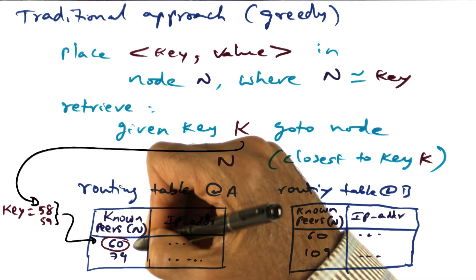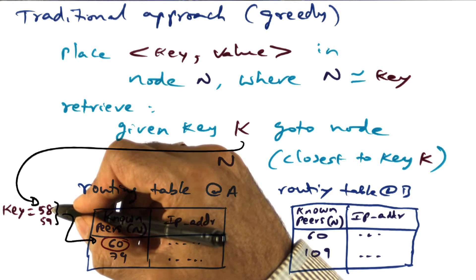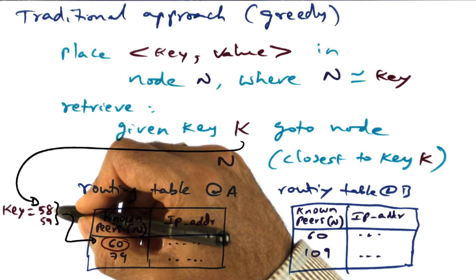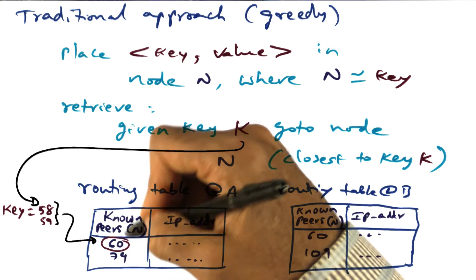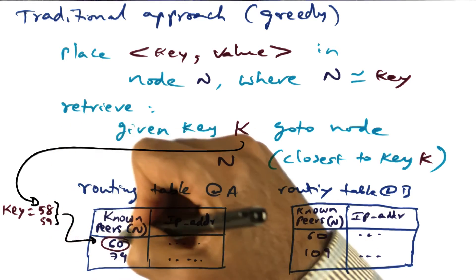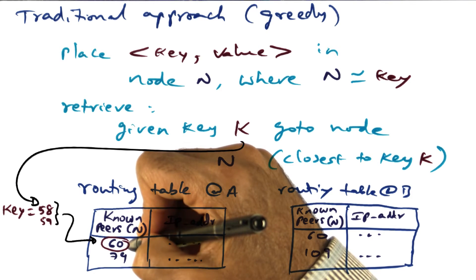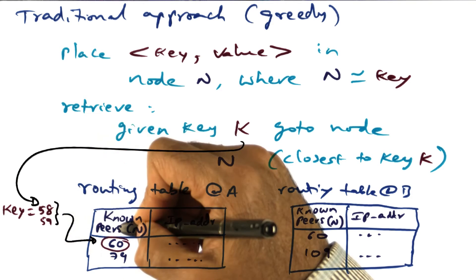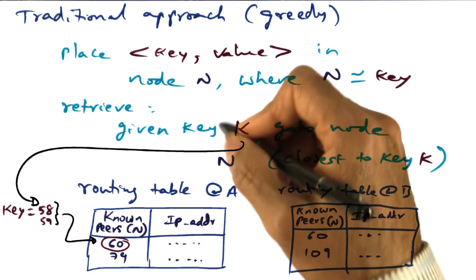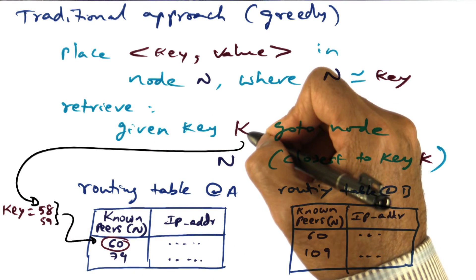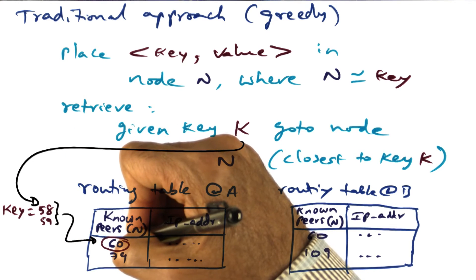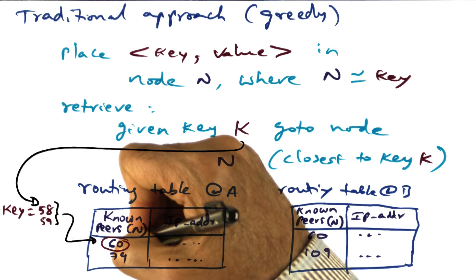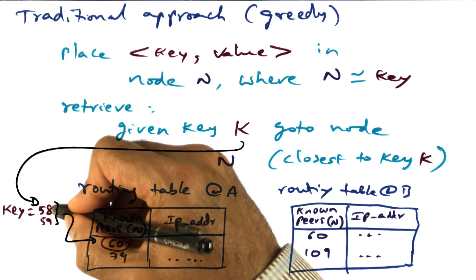It's possible that 58 is actually stored in a node ID 58, in which case my hope is the desired destination that I want to reach is known to this peer 60, who is close to the node number 58. So in other words, if I want to communicate with node number 58, my best bet is to communicate with node number 60 with the hope that 60 may actually know how to communicate with node number 58.